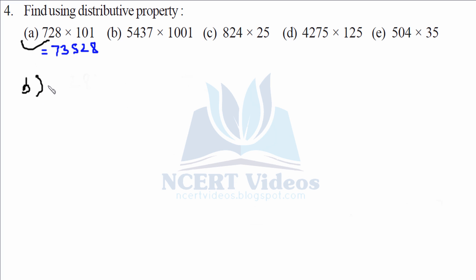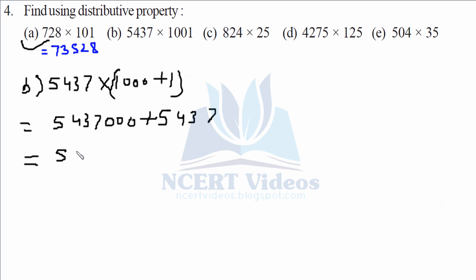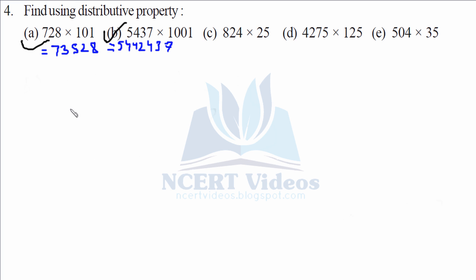Part B: 5437 into 1001. We split 1001 as 1000 plus 1. Applying distributive property: 5437 into 1000 is 5437000, plus 5437 into 1 is 5437. Adding them gives 5444437. That is your part B.